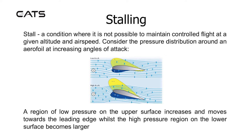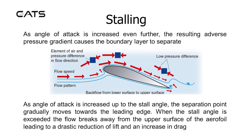Consider the pressure distribution around an airfoil at increasing angles of attack. A region of low pressure on the upper surface increases and moves towards the leading edge, whilst the higher pressure region on the lower surface becomes larger. As angle of attack is increased even further, the resulting adverse pressure gradient causes the boundary layer to separate.